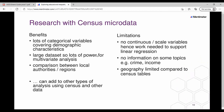What are the benefits of using census microdata? There are lots of categorical variables covering demographic characteristics. It's a large dataset so there's lots of power for multivariate analysis, and it's relatively easy to do comparisons between local authorities and regions — to select out one or more local authority areas and look at how those compare to the broader region or a country. It's a component in many studies and can help answer the big questions which may complement more local or detailed studies using survey data.